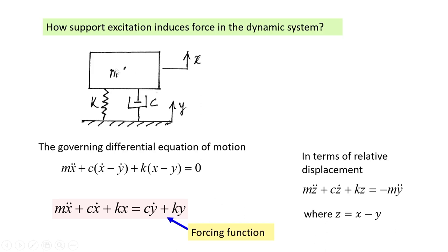The governing differential equation of motion can be written as: m x-double-dot plus c(x-dot minus y-dot) plus k(x minus y) equals 0. The term (x-dot minus y-dot) is the relative velocity between the mass and the support, giving the damping force. The term (x minus y) is the relative displacement of the spring, giving the spring force. Using Newton's second law in dynamic equilibrium, we obtain this equation of motion.